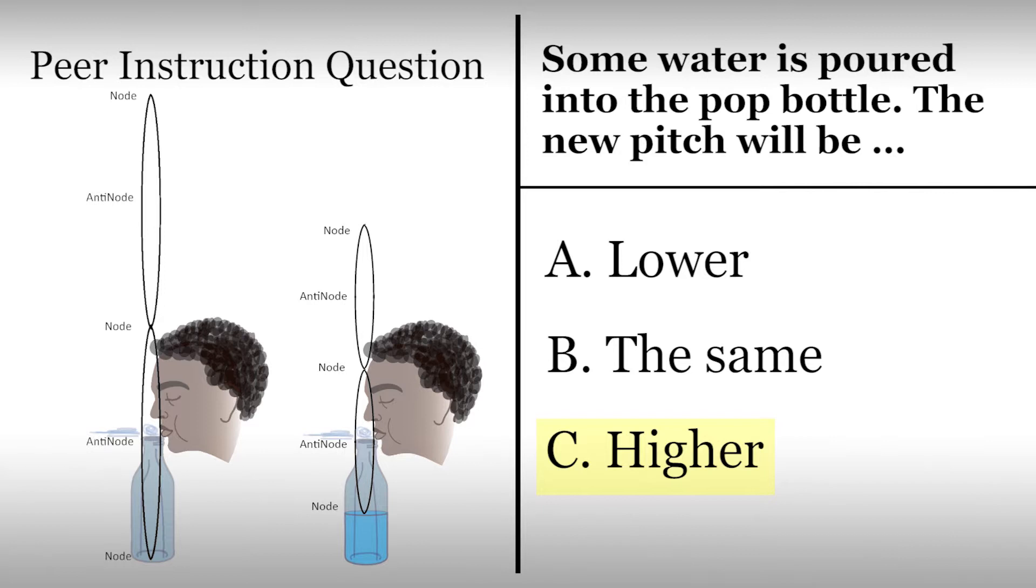The wavelength of the sound is still four times the height of the cavity, and wavelength is inversely proportional to frequency. The velocity of sound in air remains the same. Thus, with a smaller wavelength, we get a larger frequency, which we perceive as a higher pitch.